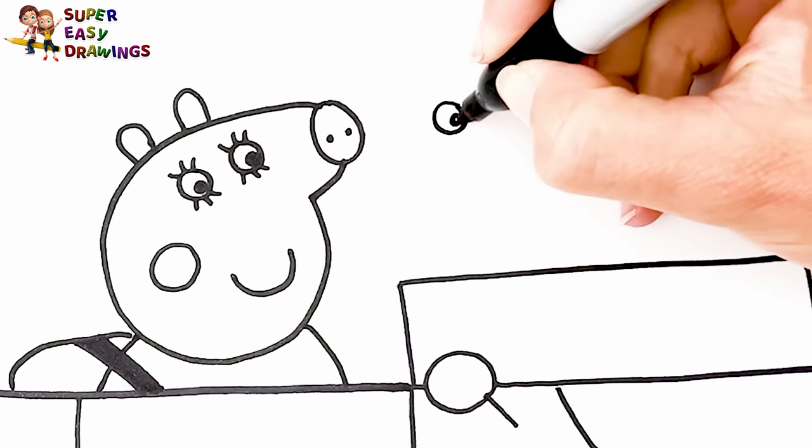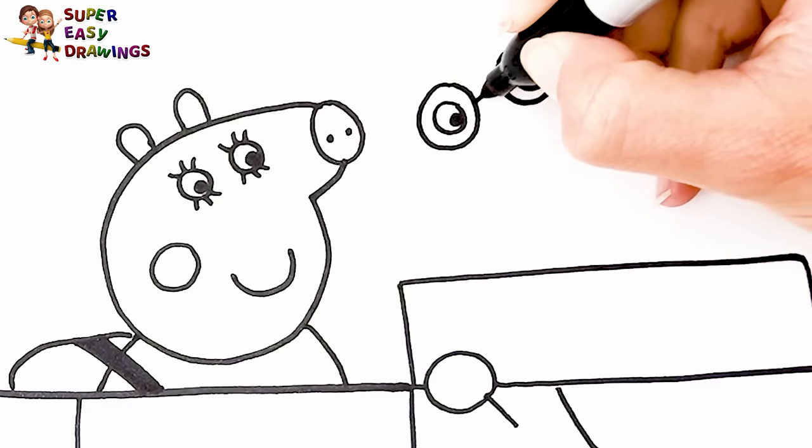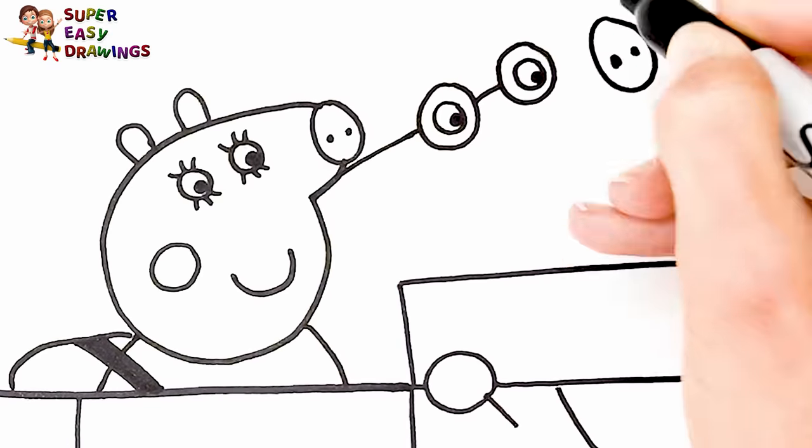Next to her, let's draw Daddy Pig. I start with his eyes and glasses. Then I draw his nose and the shape of his head.